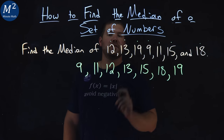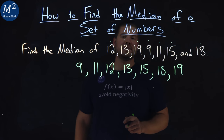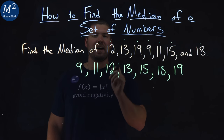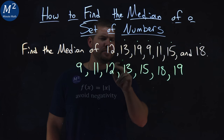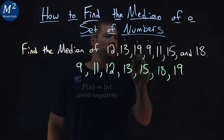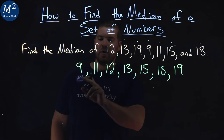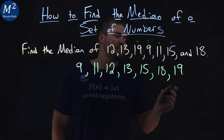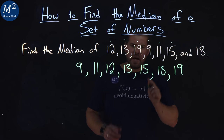Good check to do: after you've ordered it from least to greatest, count how many numbers are in each list. Counting both lists, we get 7 in each. We got 7 in both lists.